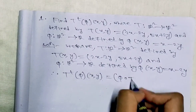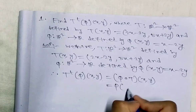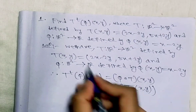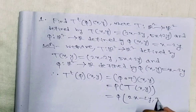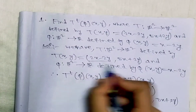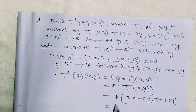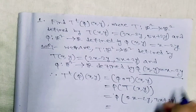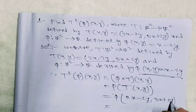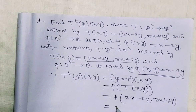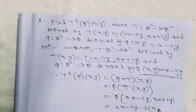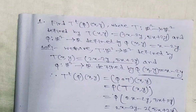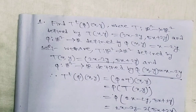Therefore, T^t(φ)(x, y) = φ∘T(x, y) = φ(T(x, y)) = φ(2x − 3y, 5x + 2y). Since φ(x, y) = x − 2y, replacing x by (2x − 3y) and y by (5x + 2y), we get (2x − 3y) − 2(5x + 2y) = 2x − 3y − 10x − 4y = −8x − 7y. So T^t(φ)(x, y) = −8x − 7y for (x, y) in ℝ².